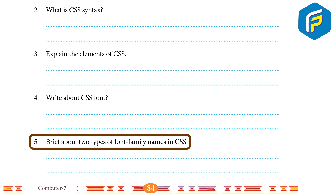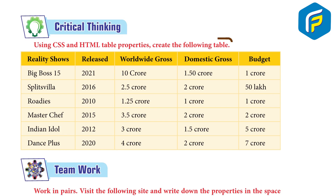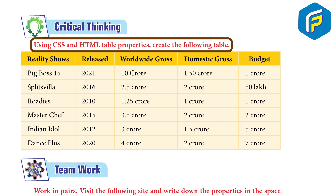5. Brief about two types of font family names in CSS. Answer: there are two types — family name: it is the name of a family of fonts that includes Arial, Times, etc.; and generic family: it is the name of the generic family that includes five categories — serif, sans-serif, cursive, fantasy, and monospace. Critical thinking: using CSS and HTML table properties, create the following table — ask students to do it by themselves.